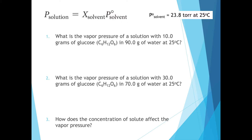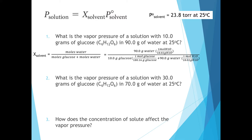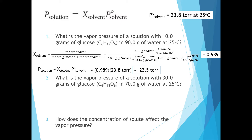Our first step is to calculate the mole fraction of the solvent. Any fraction is always the part we care about divided by the total. In this case, we're finding the moles of water compared to moles of the entire solution. We know the mass of solute and mass of water, converting to moles using the molar mass of each substance. To find moles of water, we'll take the mass of water, 90 grams, and divide by the molar mass. We'll then take the mass of glucose divided by its molar mass and add to the moles of water. The mole fraction of solvent is 0.989. We then multiply this mole fraction by the vapor pressure of pure water to get the vapor pressure of our solution, which is 23.5 torr.